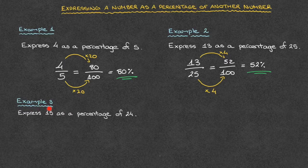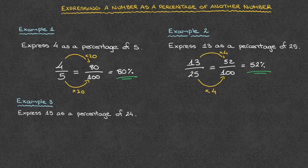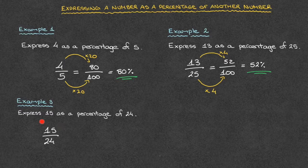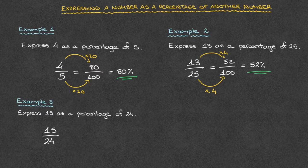Now consider example 3. We're asked to express 15 as a percentage of 24. Well, our starting point is still the same. We start by dividing 15 by 24. So I write 15 over 24. But now to write this fraction as an equivalent fraction over 100, it's a little bit trickier.